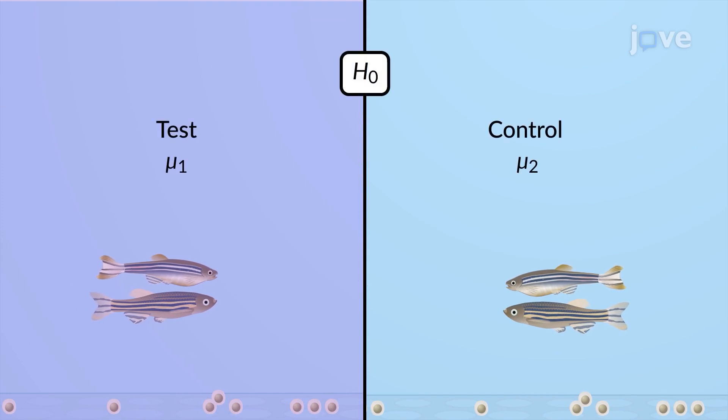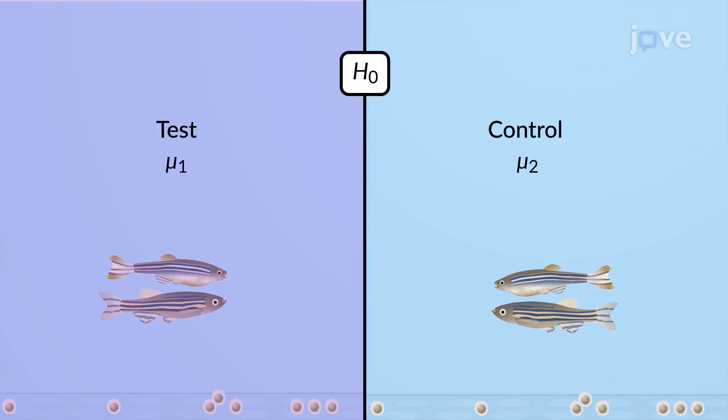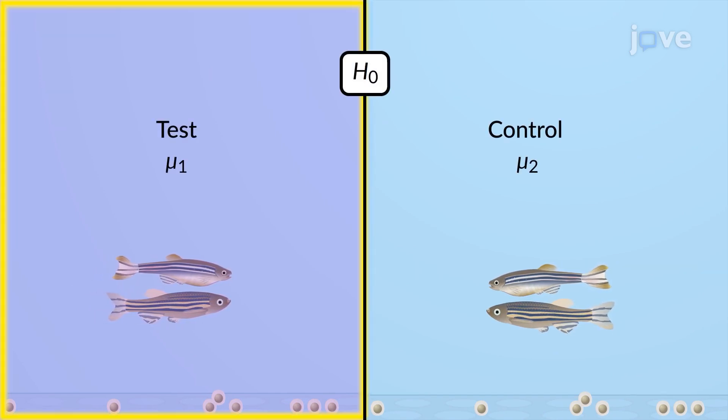To test the claim, we begin with the null hypothesis that the mean spawning rate in the exposed group is the same as the control group.